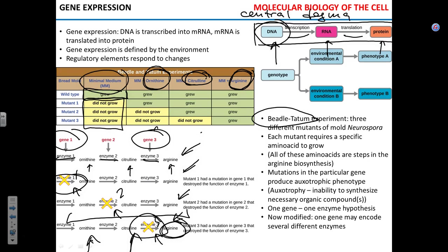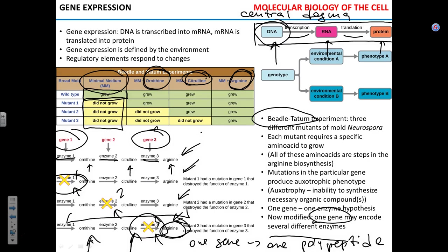It turns out it's not that simple. We now say one gene may encode several different enzymes — we can modify the statement to 'one gene, one polypeptide.' And even this may not be exactly true, as we'll see in a more complicated picture than this oversimplified scheme of the central dogma.